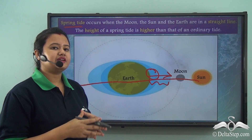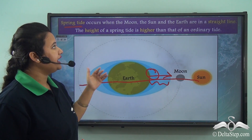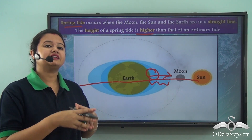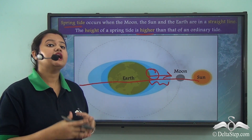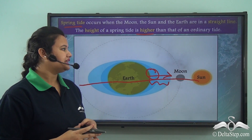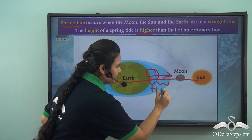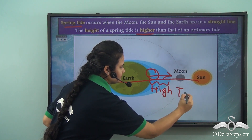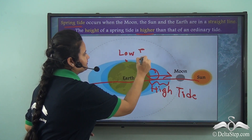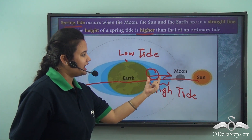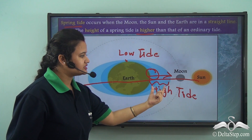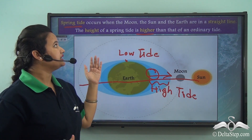During spring tide, the water level rises by a greater amount, so the height of a spring tide is usually higher than that of an ordinary tide. Also during spring tide, the difference between the height of high tide and that of low tide is very prominent — that is, the tidal range is very prominent. Looking at the picture, the height of the high tide is very high and the height of the low tide is very low.